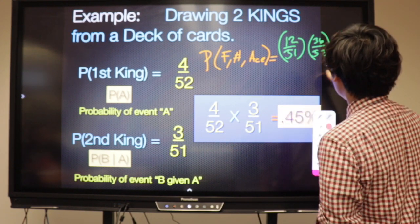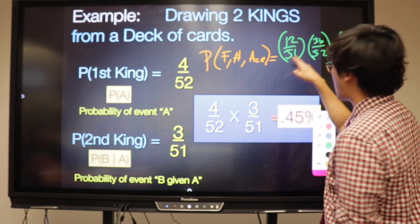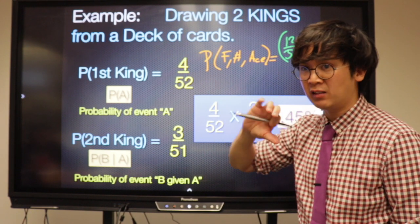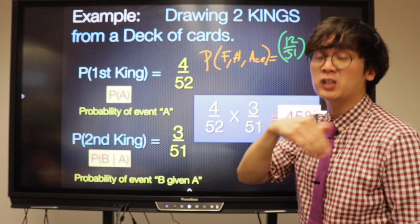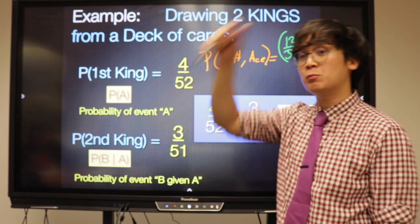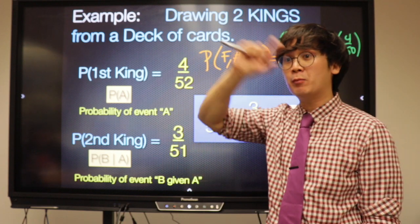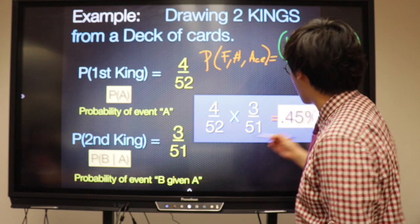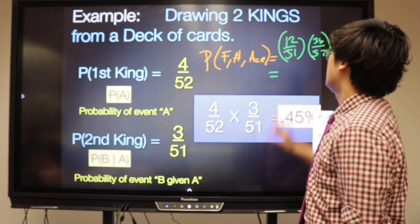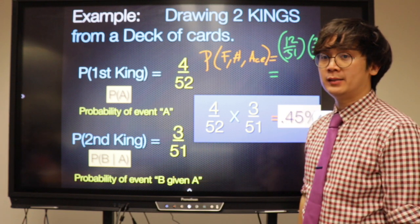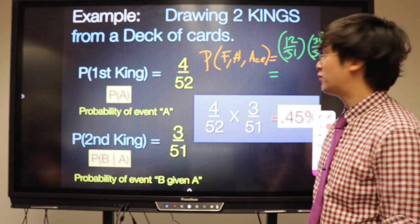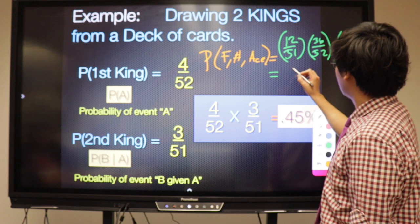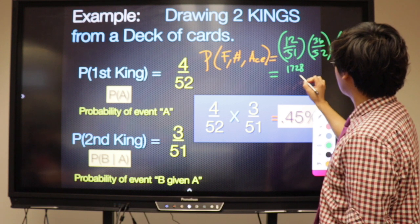Does it matter if the denominators are changing on each event? No, because multiplication multiplies the top and the bottom, and it's commutative, so your answer will still be the same. The fraction form is 1,728 divided by 132,600.